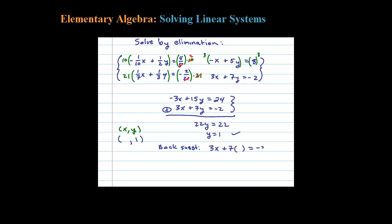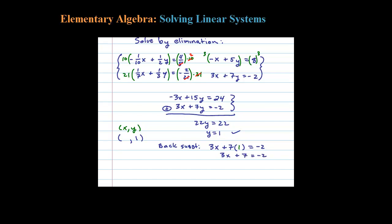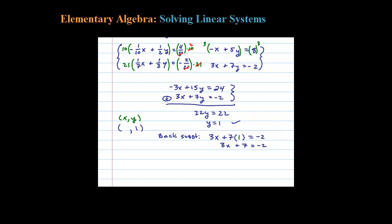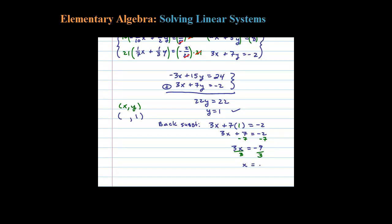We just figured out y was 1, so we'll substitute that in there, leaving me with 3x plus 7 equals negative 2. Now solving that, let's subtract 7, so 3x equals negative 9, and then dividing by 3, we have x equals negative 3.